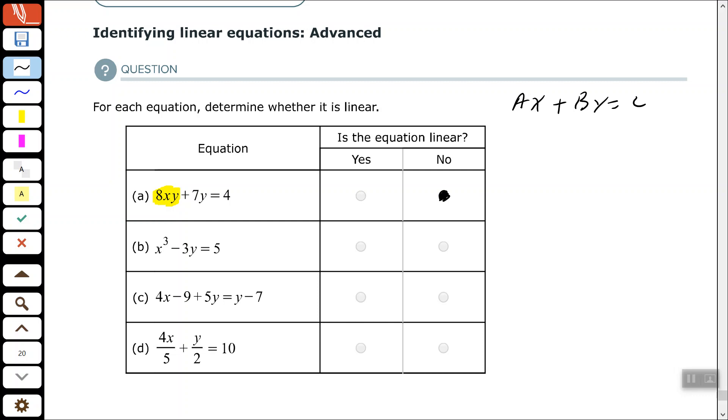Part B, we have x to the third minus 3y equals 5. In our standard form, it's only the exponent of 1 on the x and the y. So, no, this is not linear because of that exponent that's higher than 1.